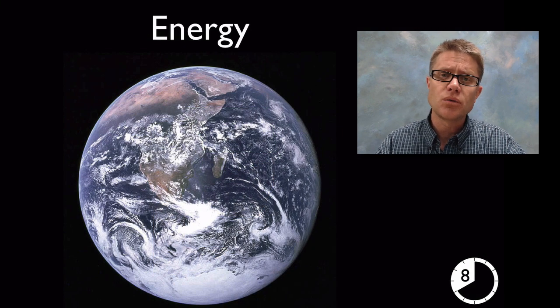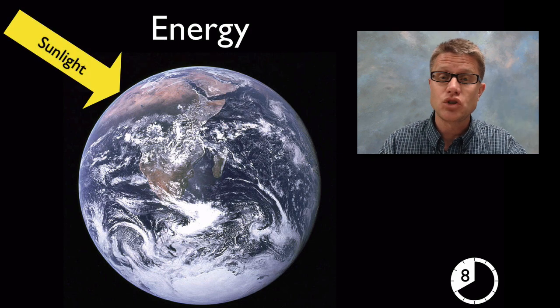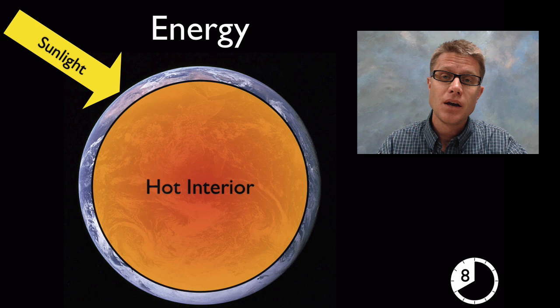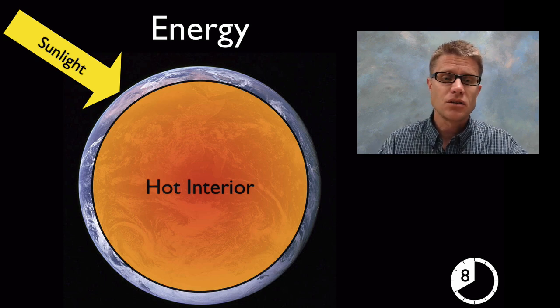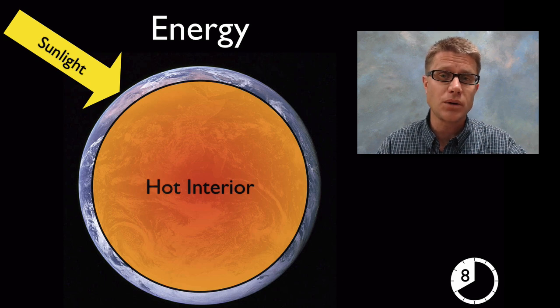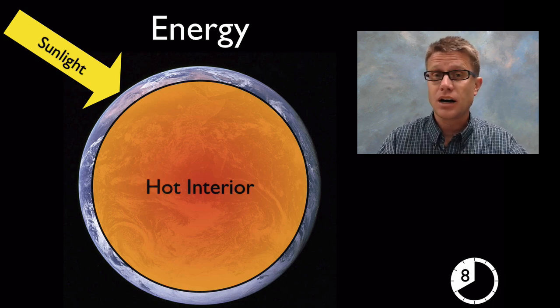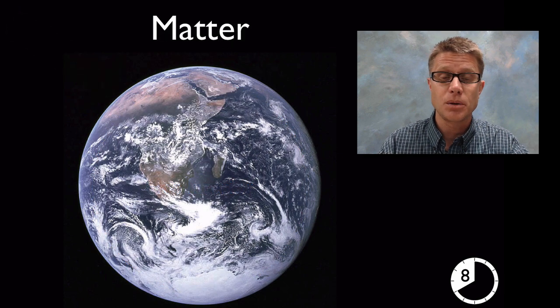As you get into middle school, you want to talk about how energy is utilized on the planet. It's coming in generally in the form of sunlight, but we're also getting a lot of energy from heat. There's leftover heat from the formation of the Earth, plus radioactive decay. That heat on the inside is being transferred to the surface of the planet.